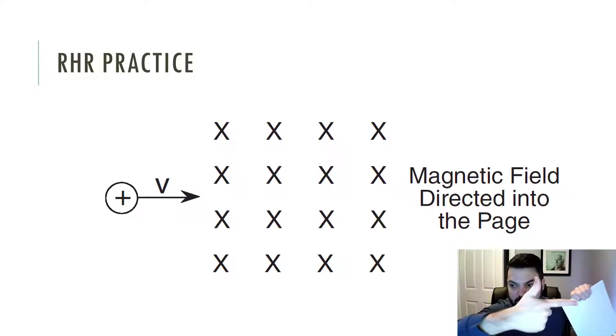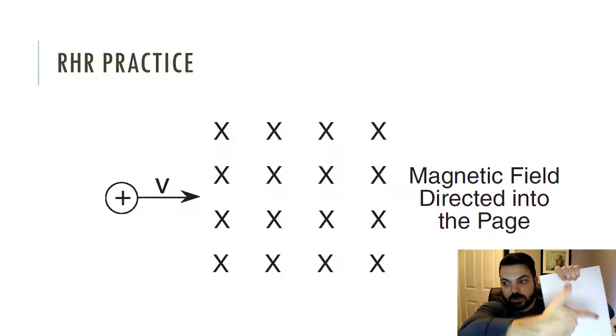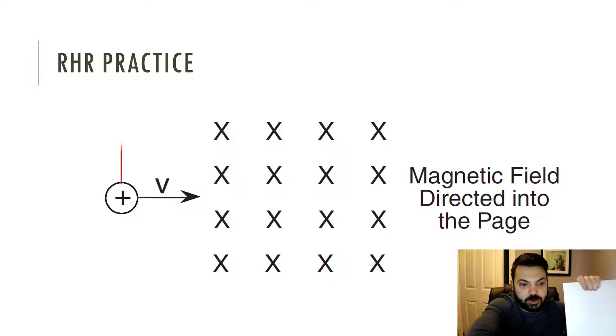You essentially want to take your hand, point the index finger in the direction of the velocity to the right on your page, and the B field, your middle finger, you're going to point it into the page like so, which makes your thumb point upwards on the paper. The force is up on this charge as it moves. That's the right hand rule for this one.